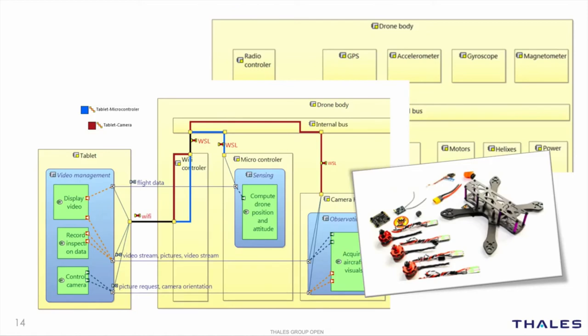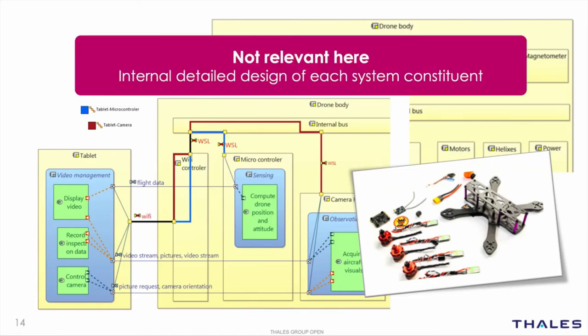Here, we choose that the base station is actually made of a joystick and a tablet. We choose which sensors we are going to use, we specify the communication media, and specify precisely the interfaces in order to guarantee a proper integration later on. What is not relevant here is the internal detailed design of each system constituent — this will be the topic of downstream engineering models that can be automatically produced by Capella.